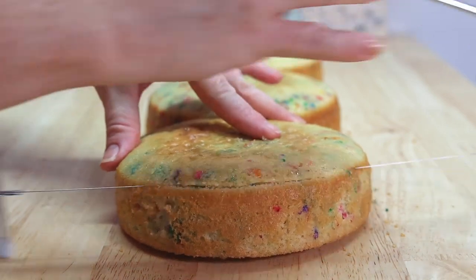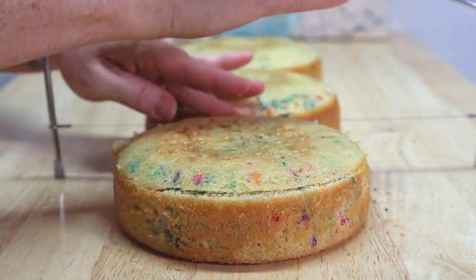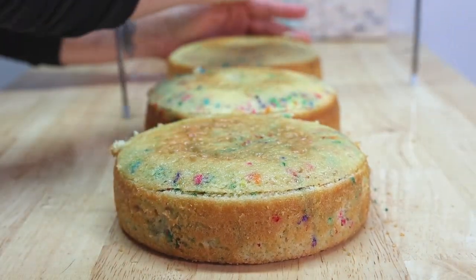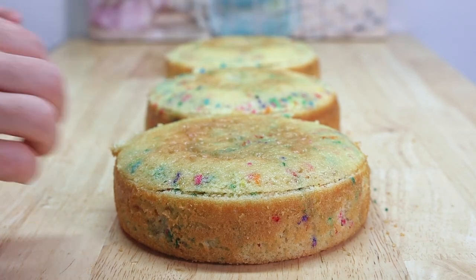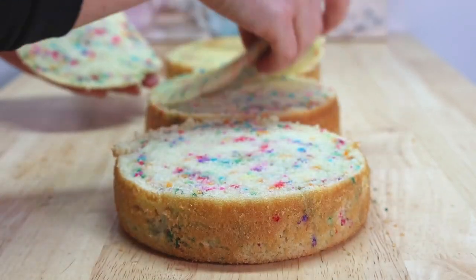So for today's cake we're going to be using three six-inch layers of my favorite rainbow sprinkle recipe and we're just going to begin by leveling these layers out so that way we can begin stacking and filling.